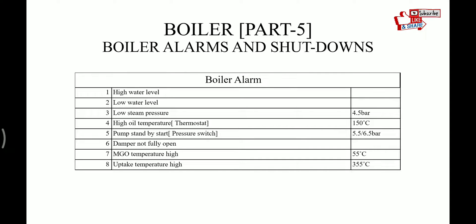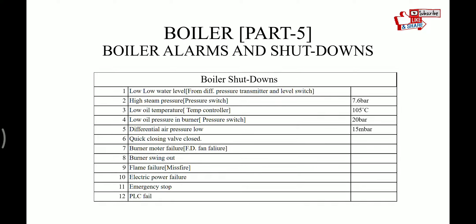Now boiler shutdowns. Low-low water level comes from two different sources: the differential pressure transmitter and the level switch. Then we have high steam pressure from the pressure switch, low oil temperature from the temperature controller, and low oil pressure in burner from the pressure switch.